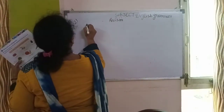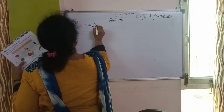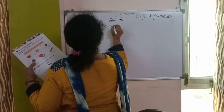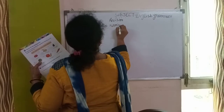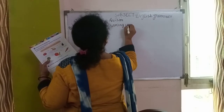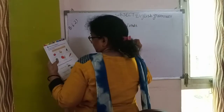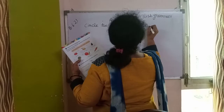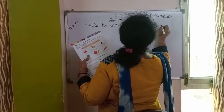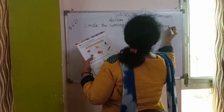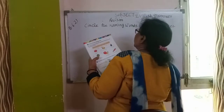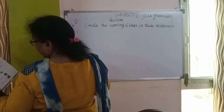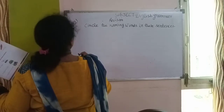The exercise is: Circle the naming words in these sentences. मैं आपको sentence दे रही हूँ, उसमें हमें naming words को circle करना है.